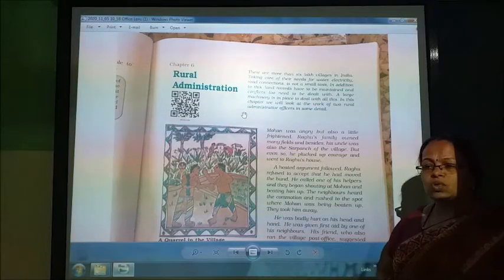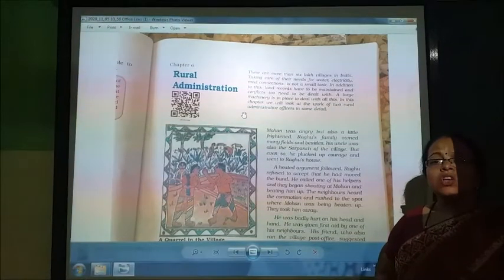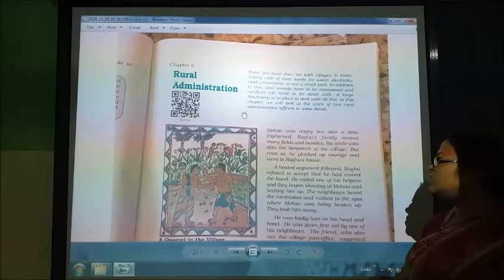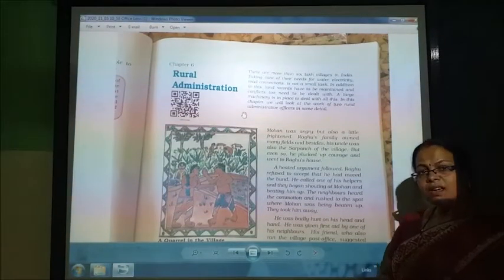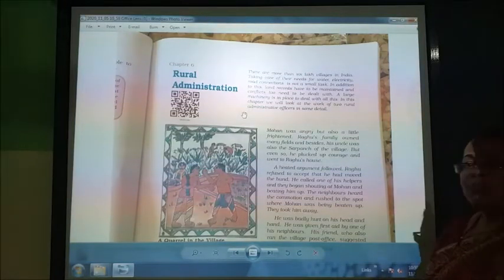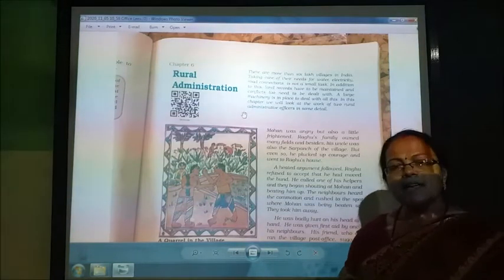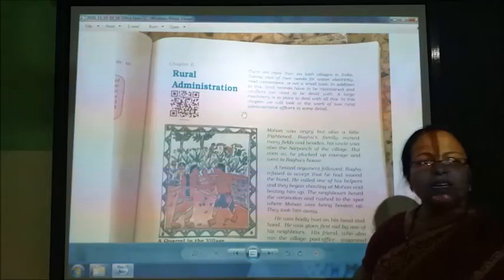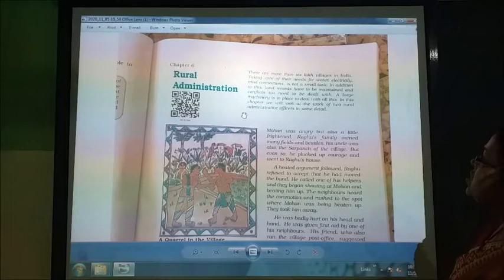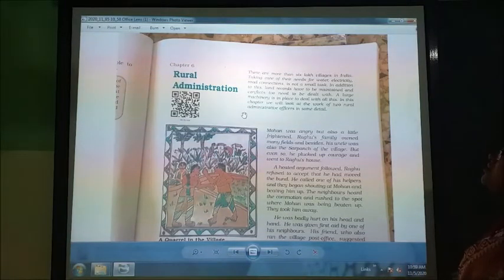We will study what kind of administration is happening, what kind of law is being followed, what kind of records are maintained, and what kind of things we are going to study in this chapter. There are more than 6 lakh villages in India, and taking care of their needs for water, electricity, and road connection is not a small task for the government.